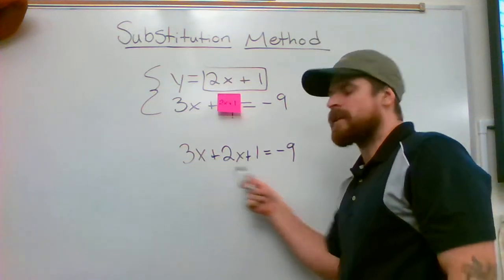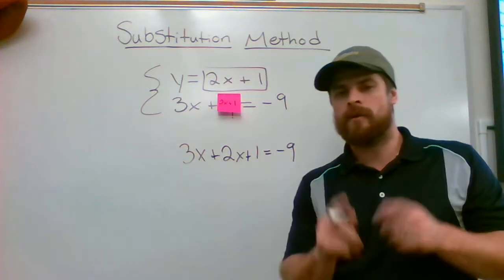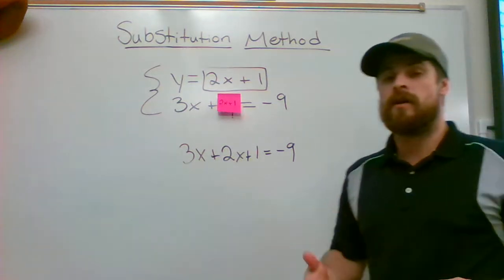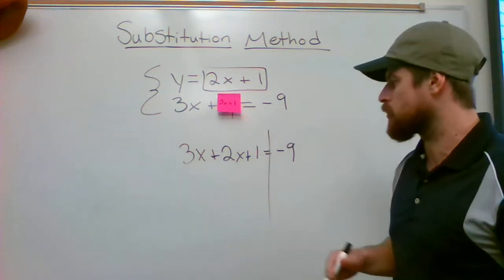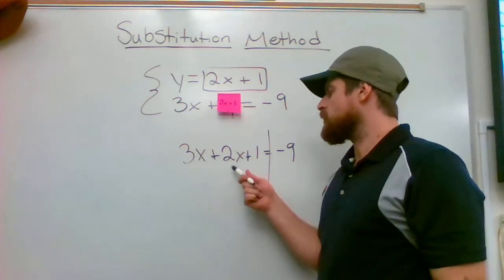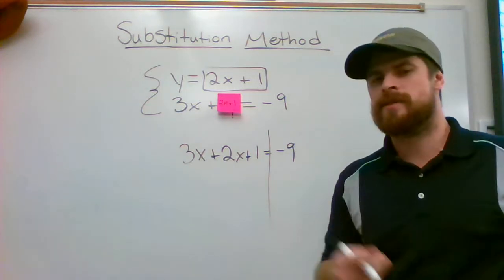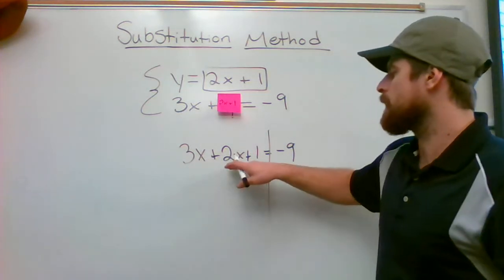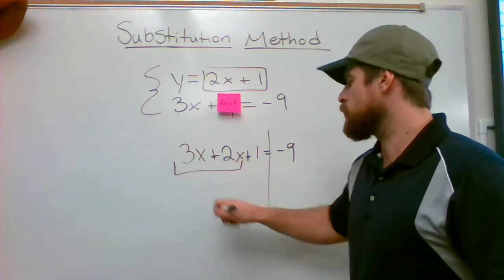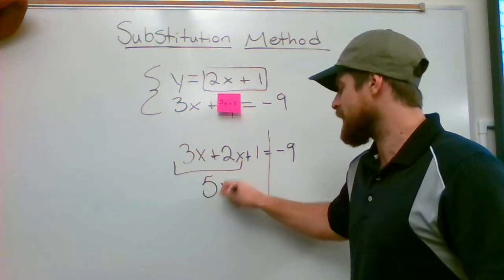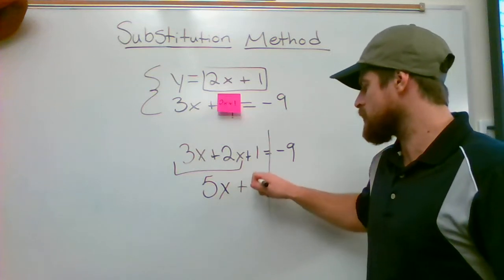I now have an equation that only has one variable in it. This is a good thing because we can solve equations with one variable by using inverse operations and combining like terms. I'm going to combine my like terms on the left side. The only two like terms that I have are the 3x and the 2x. So these are going to go together. 3 plus 2 is going to give me a grand total of 5x. We're going to add the one that hasn't been touched.